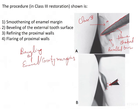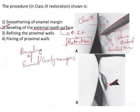The procedure in Class III restoration shown is the beveling of the external tooth surface and the purpose is to increase surface area and that will guarantee you more and more retention. That will be adding retention feature for better bonding of the composite to the cavity.